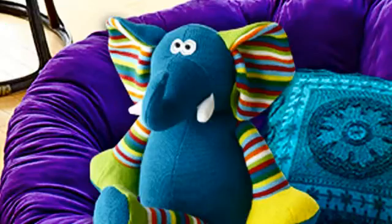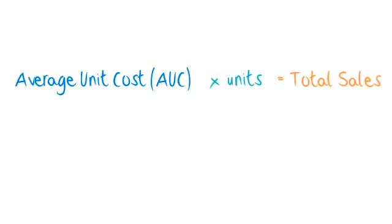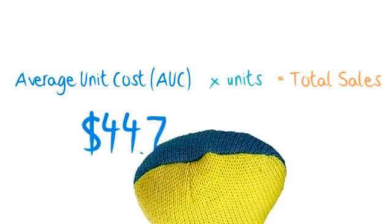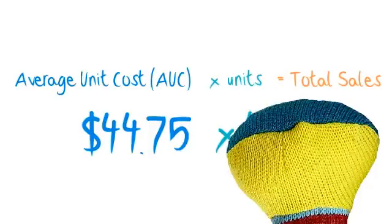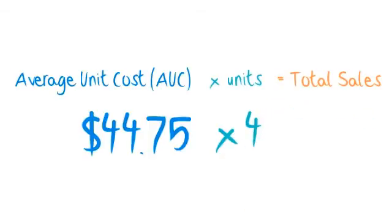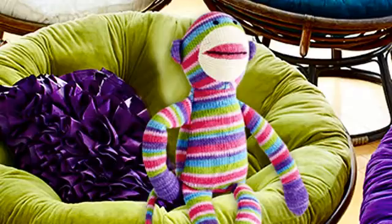Can I try? Here's how I figure it. You're using the total retail price, but I use the cost of making the chair, which is about $44.75. So I take the total cost and multiply it by the total number of units, which comes out to $179.